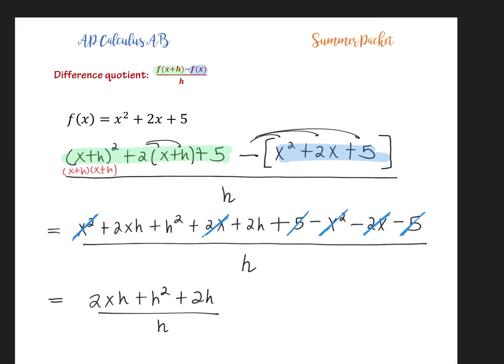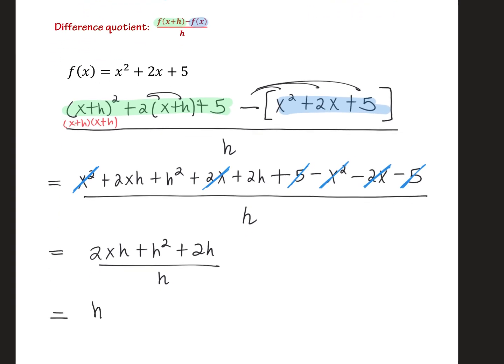And then if I keep going on here, notice because everything has an h in it in the numerator, like I said, I'm going to factor an h out. And then the big thing here is that h will cancel with this h. So then I'm left with 2x + h + 2. So everyone, this is the difference quotient. We'll be taking a limit of this, as you'll see later on in the packet, as well as in our early days of calculus.